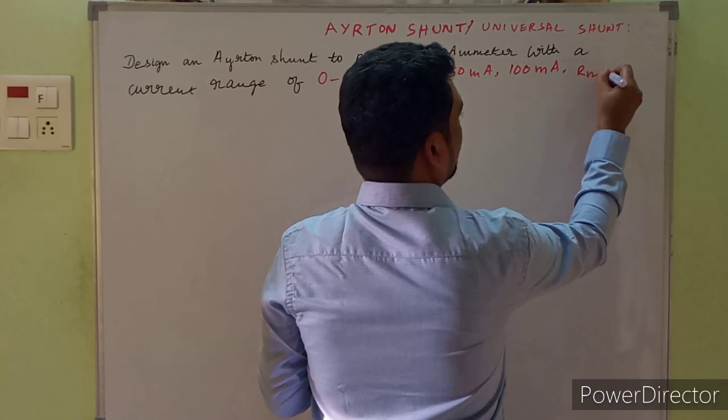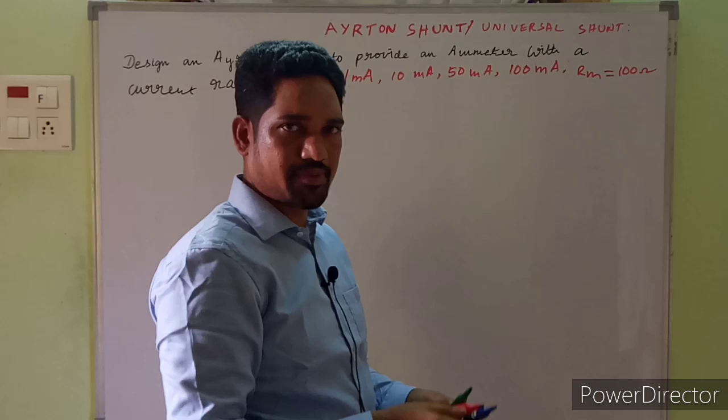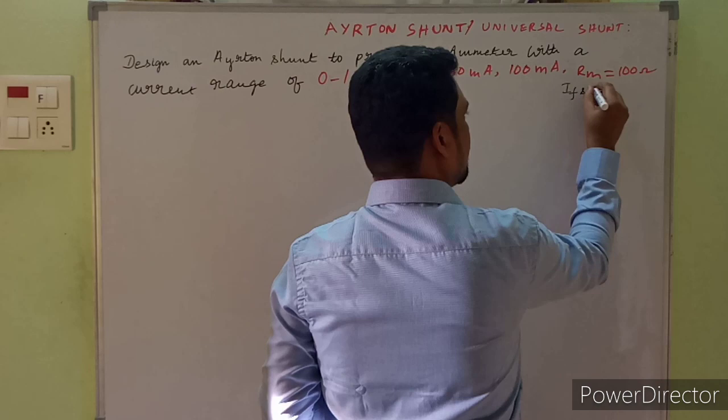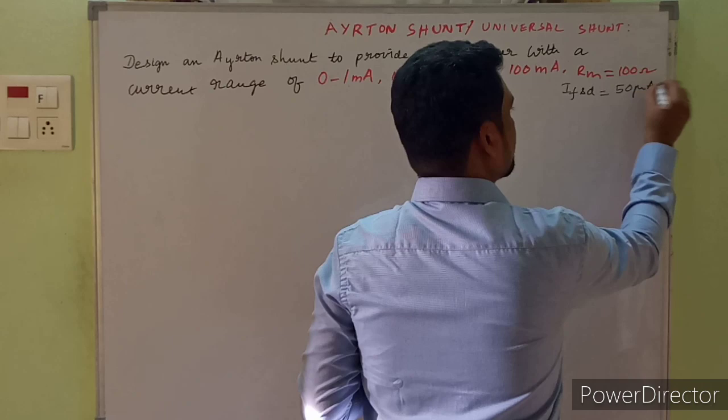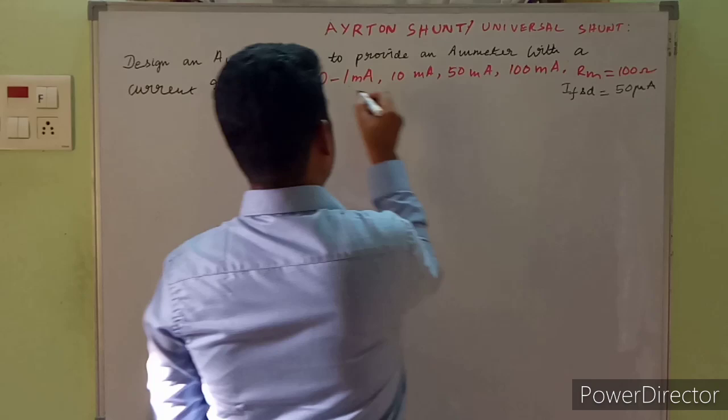The given information is: internal resistance of the basic meter RM = 100 ohms, and IFSD = 50 micro amperes. Please make a note of this given information.